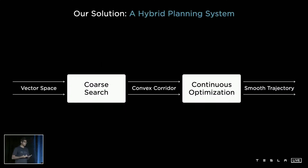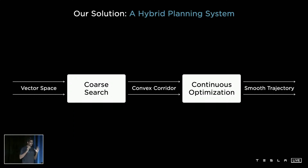Our solution to this entire problem is to break it down hierarchically. First, use a coarse search method to address the non-convexity and come up with a convex corridor, and then use continuous optimization techniques to produce the final smooth trajectory.